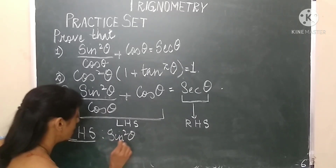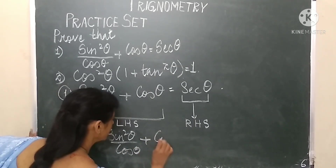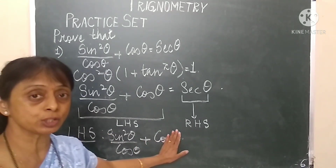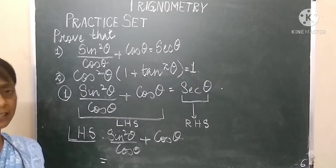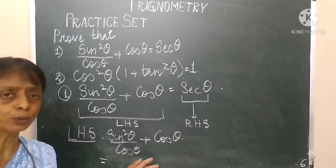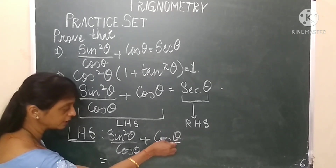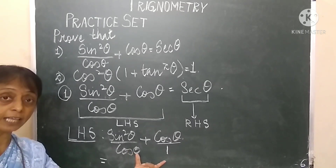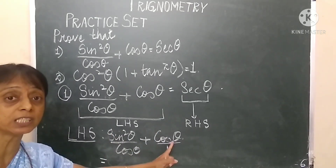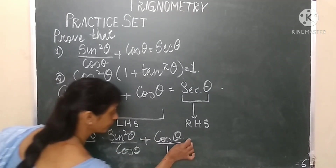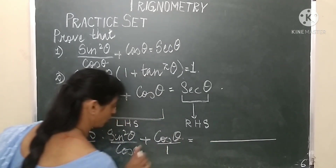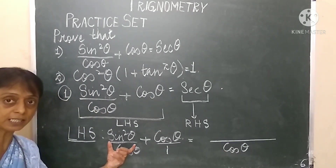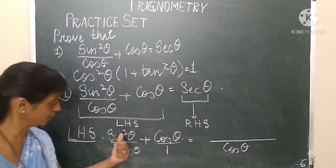We have sin²θ/cosθ + cosθ. We have a fraction added to a term which is only in the numerator. When a term has only cosθ in the numerator, its denominator is understood to be 1. The LCM of the two denominators, cosθ and 1, is cosθ. So we equalize both denominators to the LCM, which is cosθ.